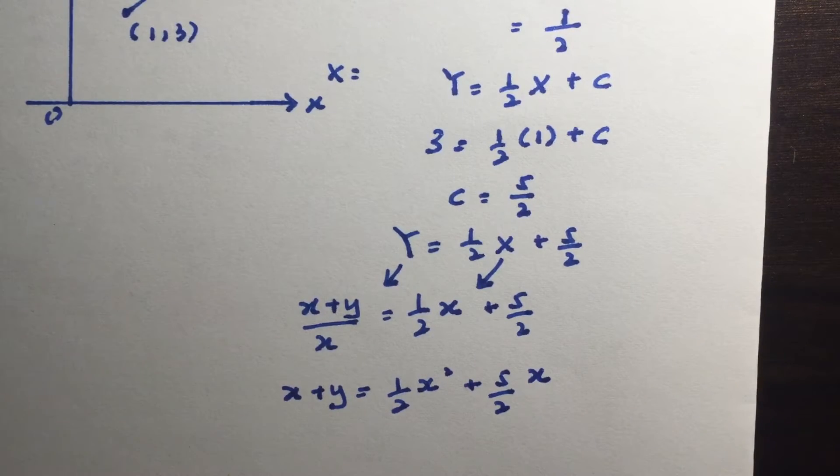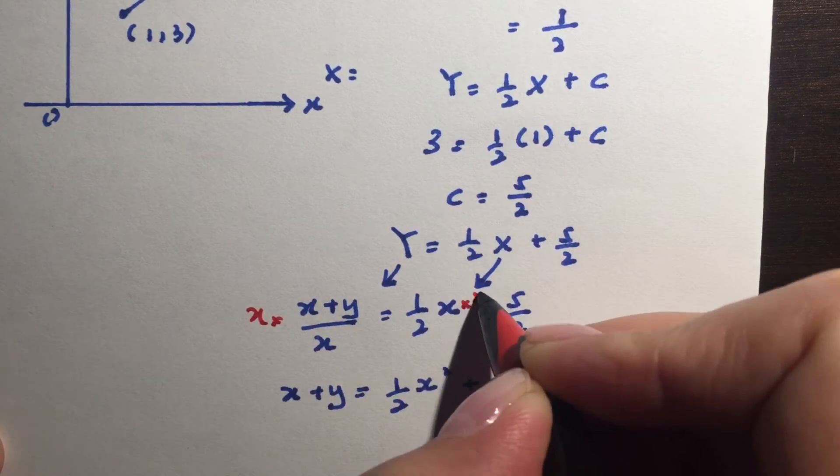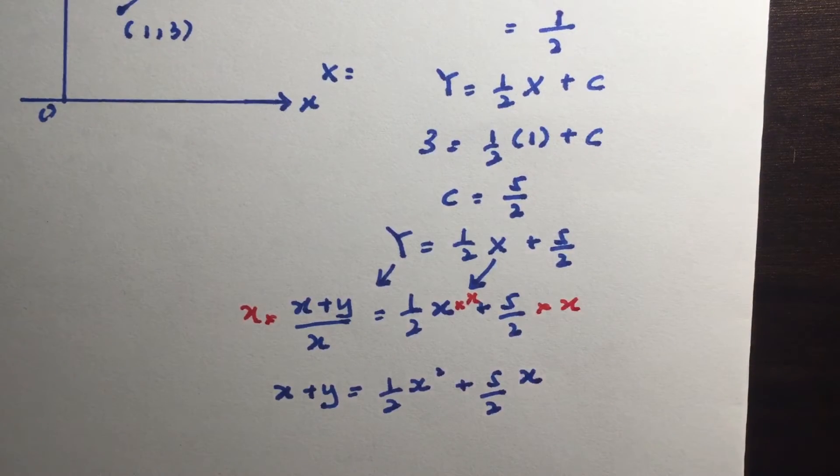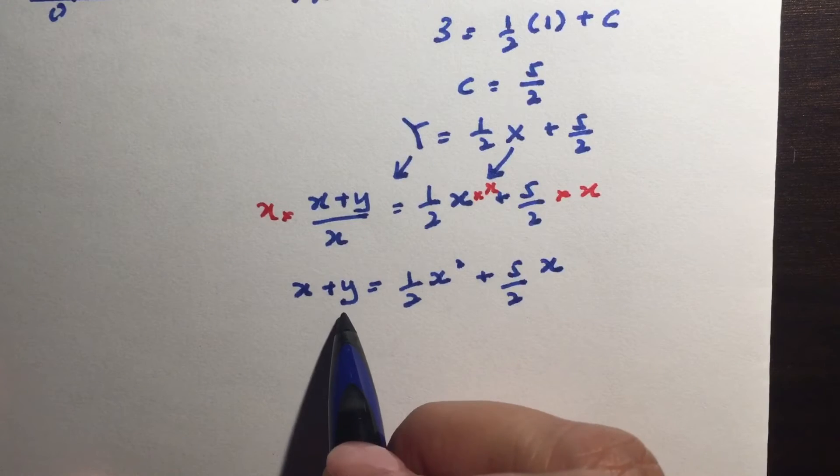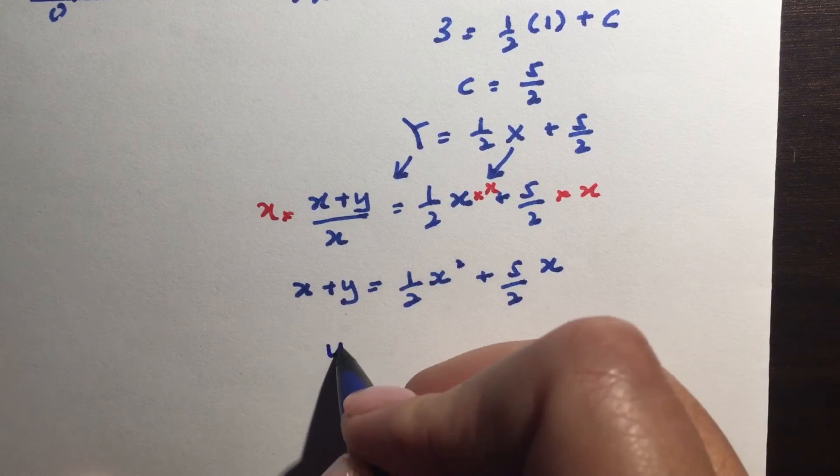So times x times x times x, the x and x will cancel each other off. So both x and x divides itself out. Now to make y the subject I have to get rid of the x here.